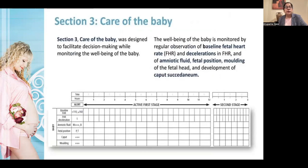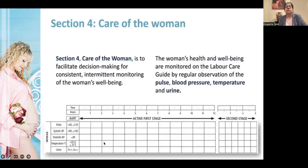Section three is care of the baby: baseline fetal heart rate, presence of decelerations, amniotic fluid and whether it is meconium stained, fetal position, caput, and molding — with an alert section where any abnormality is marked in red. Section four is care of the woman, recording all her vitals: blood pressure (systolic and diastolic), pulse, temperature, and urine output.